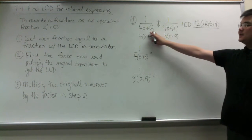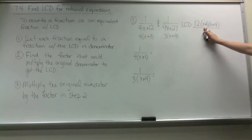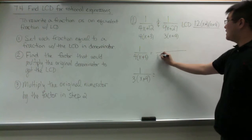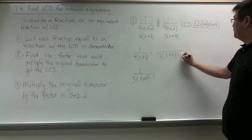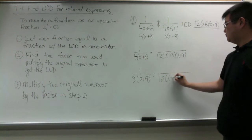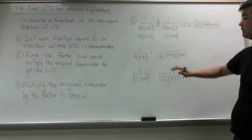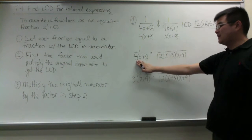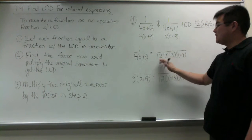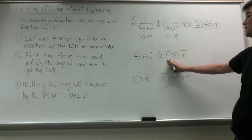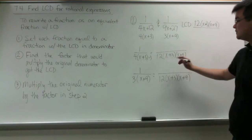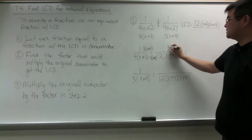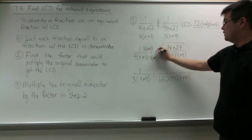In our next example using example 2 from before, the LCD was 12 times the quantity x plus 3 times the quantity x plus 9. We write both fractions with that common denominator. Note that the denominator is written in factored form rather than as 4x plus 12, making it easier to see what multiplies to give the LCD. So 4 times 3 gives 12, meaning we multiply by 3. There is already an x plus 3, so we multiply that by 1, and we also need x plus 9. So 3 times x plus 9 is what we multiply the numerator by, giving 3x plus 27 when distributed.